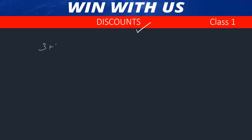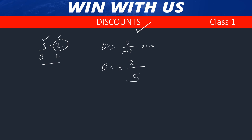3 plus 2 offer — buy 3 get 2 free. Discount is: discount divided by market price into 100. In a 3+2 offer, 2 items are free out of 5 total. Market price of 5 items: 5 items total, 2 are free. Total discount divided by market price into 100 gives the discount percentage. 2 by 5 into 100 equals 40%. This formula gives 40% discount.